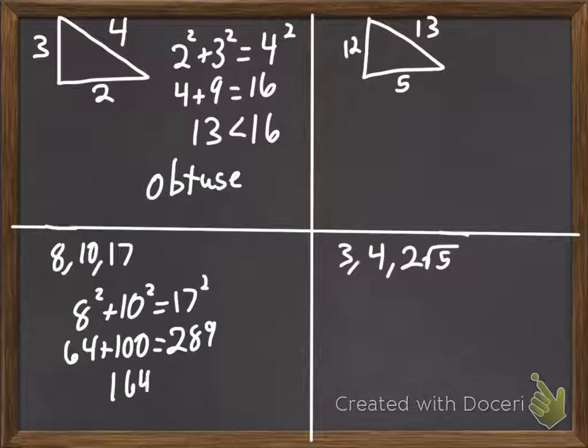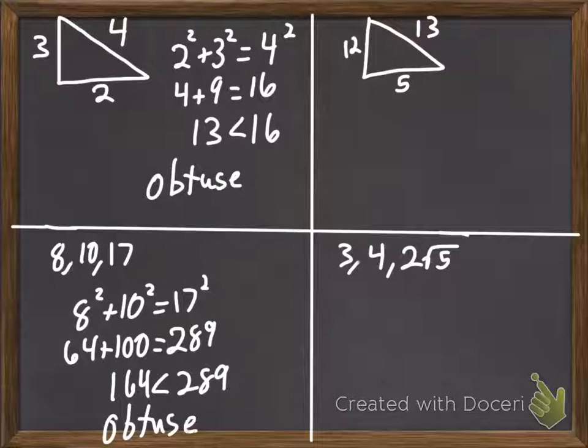So, 164 and 289. So, again, it looks like this is obtuse. Alright, I want you to do the two on the right as your practice. So, go ahead and pause the video and do those now.